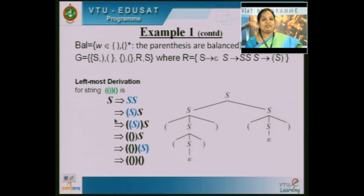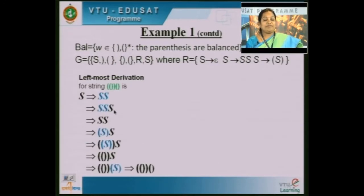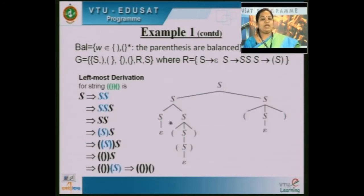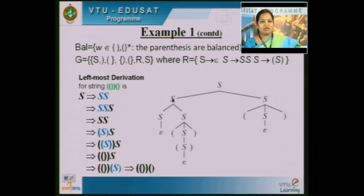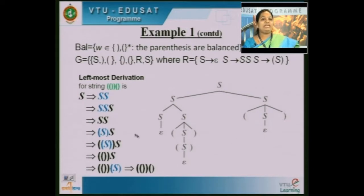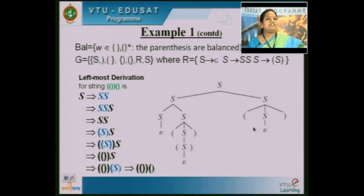This is the parse tree obtained for the first leftmost derivation. For the second leftmost derivation the parse tree looks like this: S tends to SS, then the first S as epsilon. Next S tends to opening parenthesis S closing parenthesis, again S tends to opening parenthesis S closing parenthesis with S tending to epsilon. Similarly S tends to opening parenthesis with S tending to epsilon. Reading from left to right: opening, opening, closing, closing, opening, closing. So these are the two parse trees obtained from these two leftmost derivations.